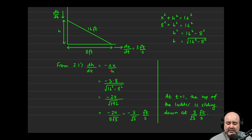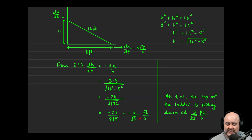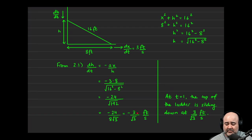Once we get the answer, we interpret it: at t equals 1, the top of the ladder is sliding down at 3 over √3 feet per second. The negative sign indicates sliding down; don't write the negative in the rate — write 'sliding down' instead. For free response, stop at this form; for multiple choice, simplify to match answer choices like 3√3/3 or √3.